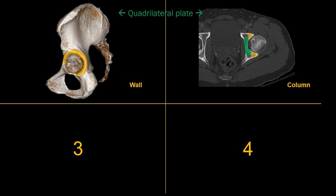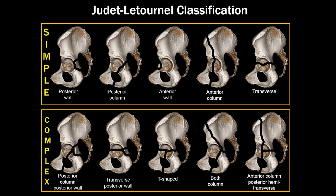We've already worked out two of the four concepts: we know what a wall is and what it does, we know where the columns are, and we know we'll use the quadrilateral plate on a routine CT to tell the difference between the two. Now let's take a look at the classification system itself.